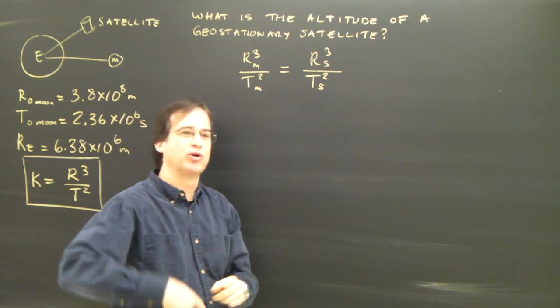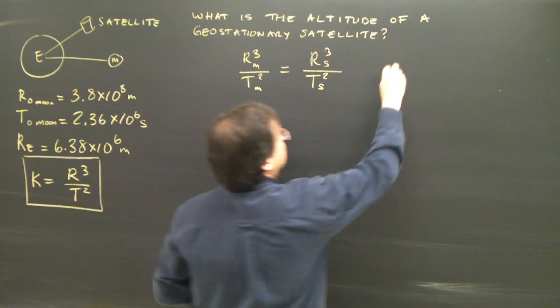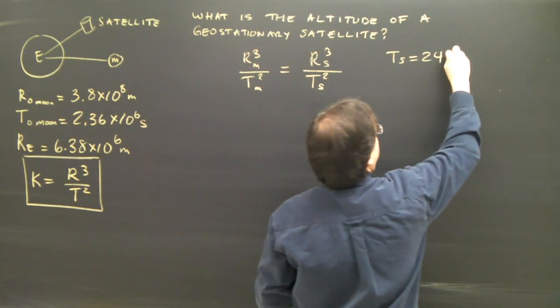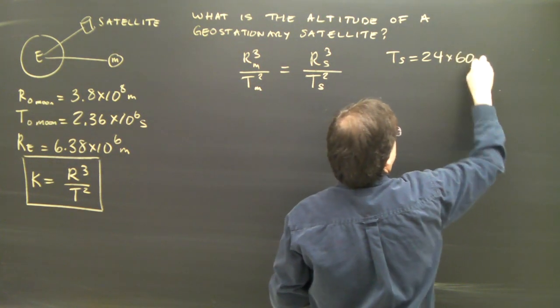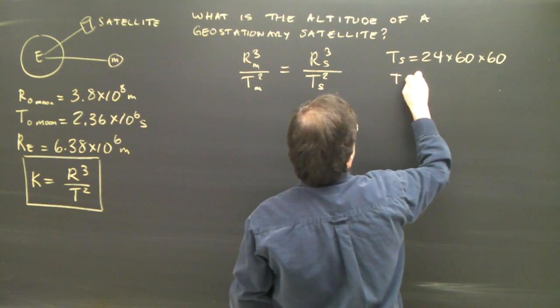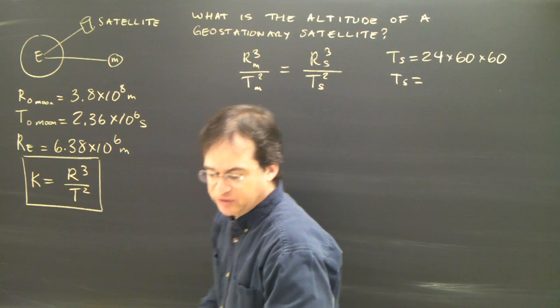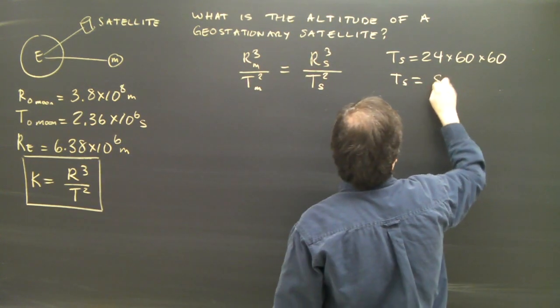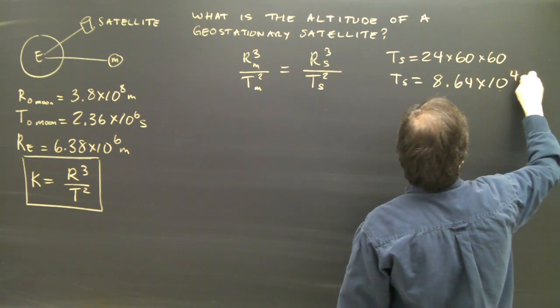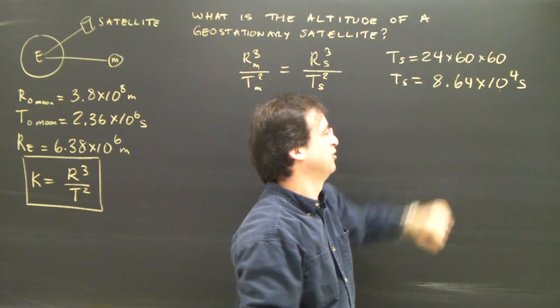The period of the satellite is going around the Earth once every 24 hours, once a day. So the period of the satellite is equal to 24 hours. But we've got to turn that into seconds. So we multiply by 60 to give us minutes times 60. The period of the satellite is 8.64 times 10 to the 4 seconds. So 24 times 60 times 60 gives me that number. That's the period of the satellite in seconds.